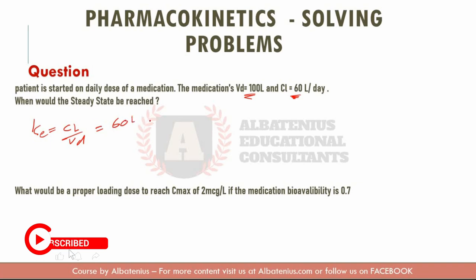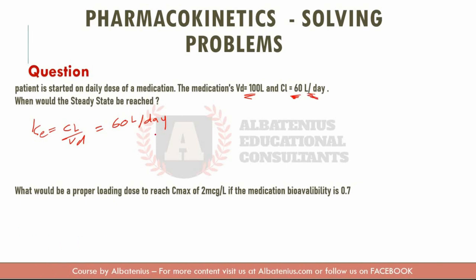So clearance is 60 liters per day — watch out that it's 60 liters per day, not per hour. Watch for your units. So 60 liters per day divided by the volume of distribution of 100 liters. The unit of time in this question is day, not hour, so pay close attention.